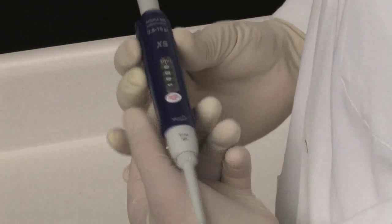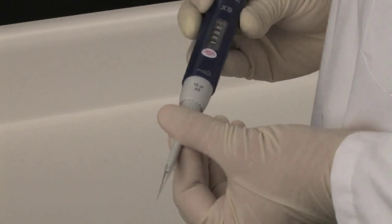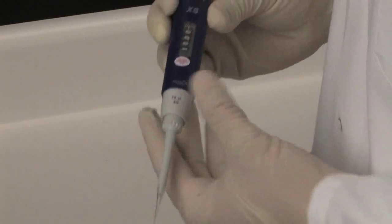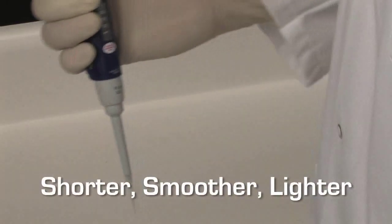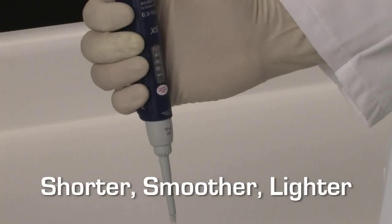including precise setting and checking volumes, as well as user-friendly tip adjustment to accommodate a variety of tips, the 826XS is shorter, smoother, and lighter.